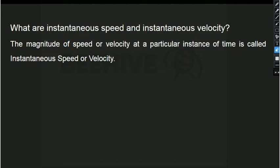Instantaneous speed and instantaneous velocity refer to the speed or velocity of an object at a particular instant of time — for example, 10 km per second at one particular instant. That sudden speed or velocity at that instant is the instantaneous speed or velocity.